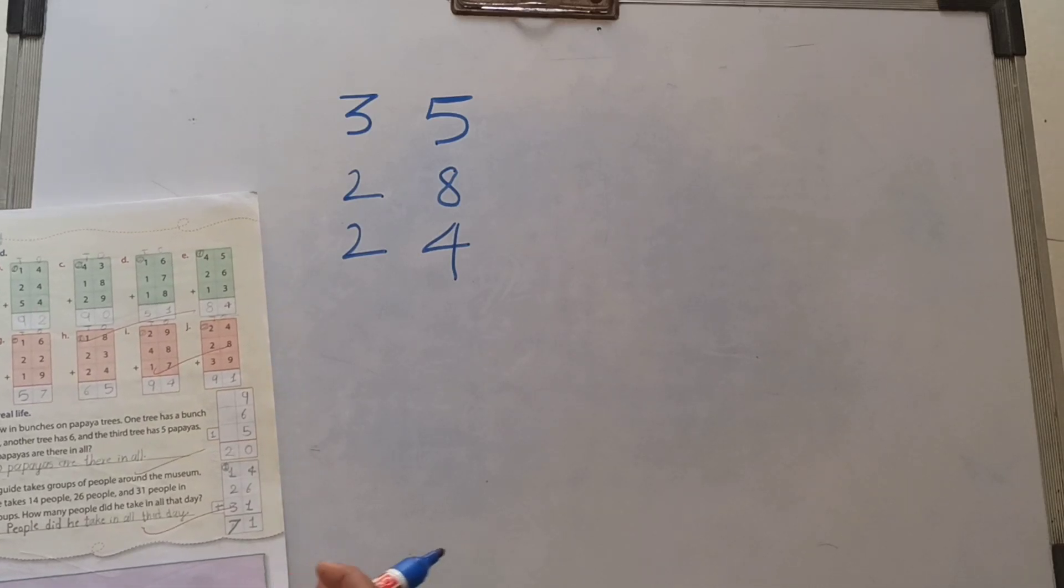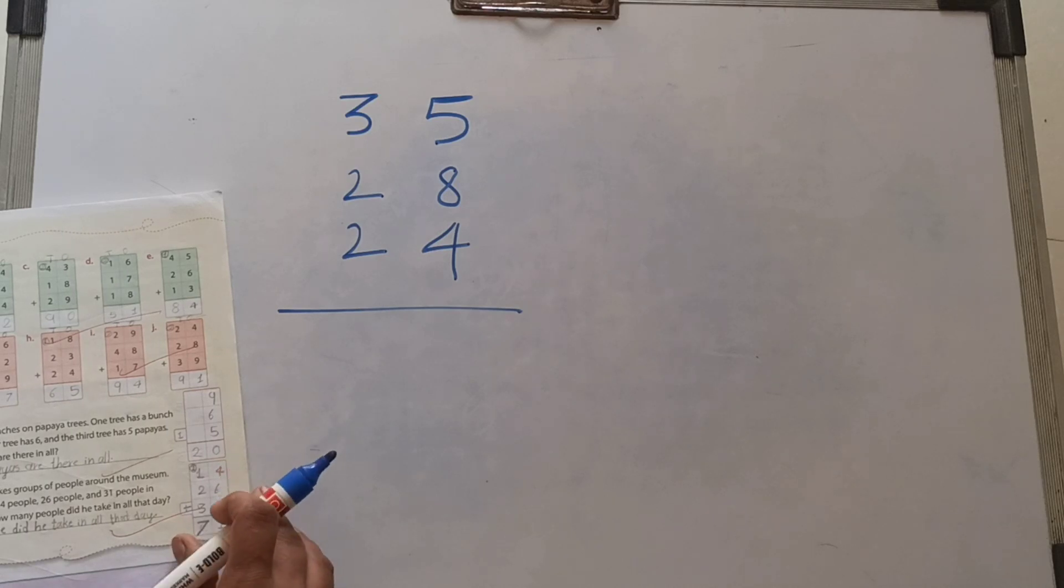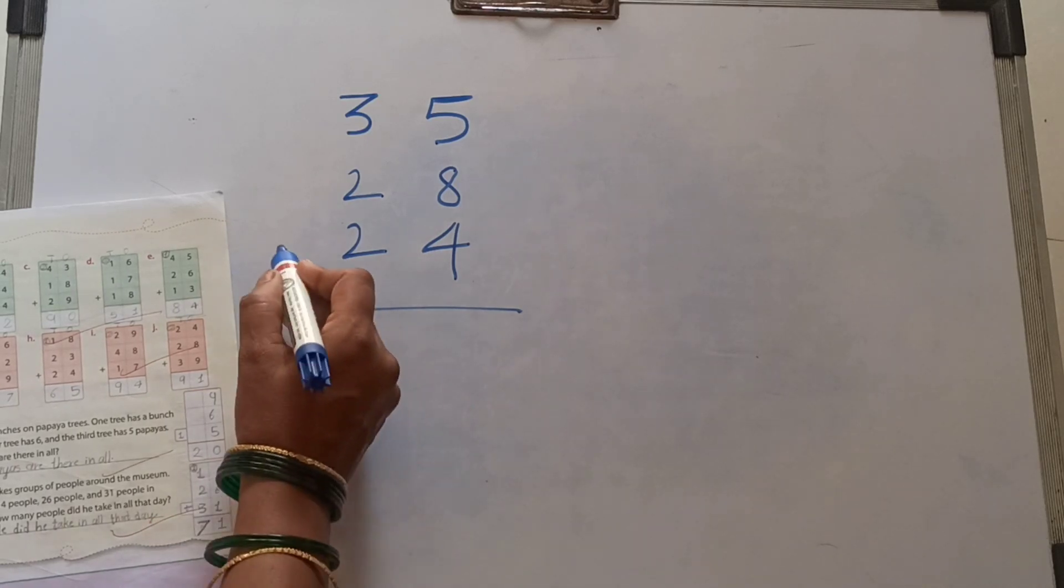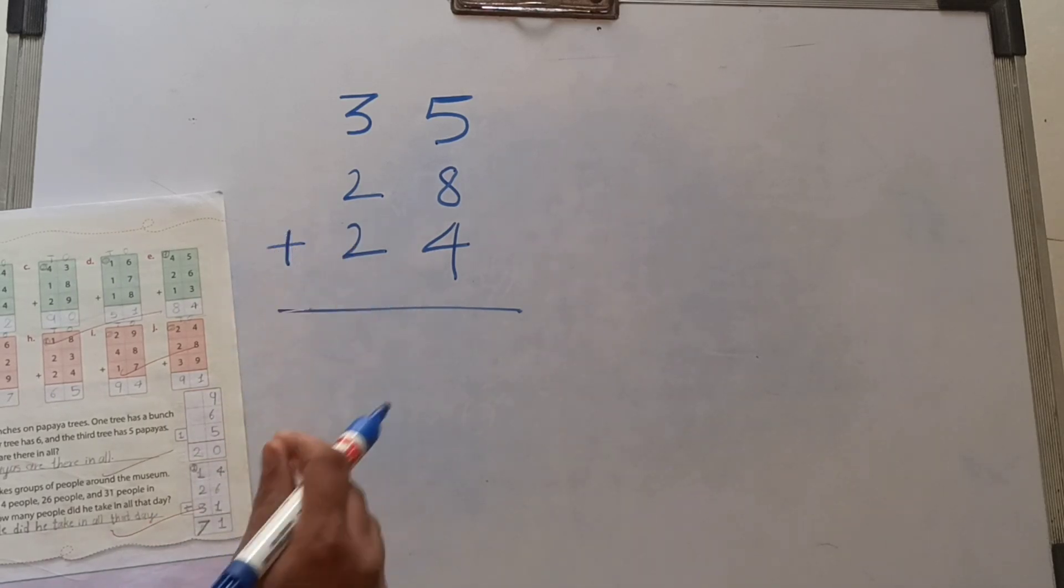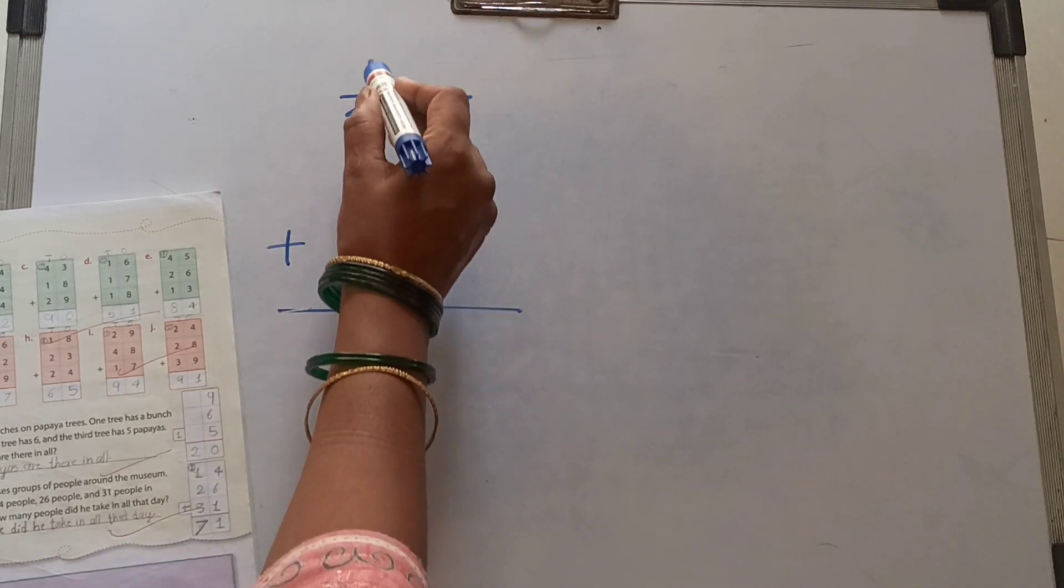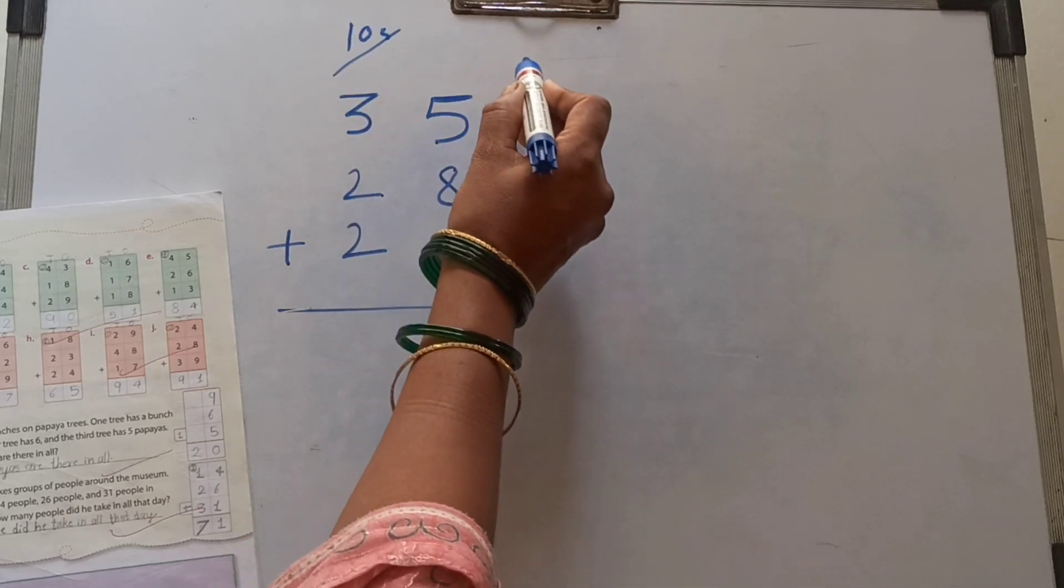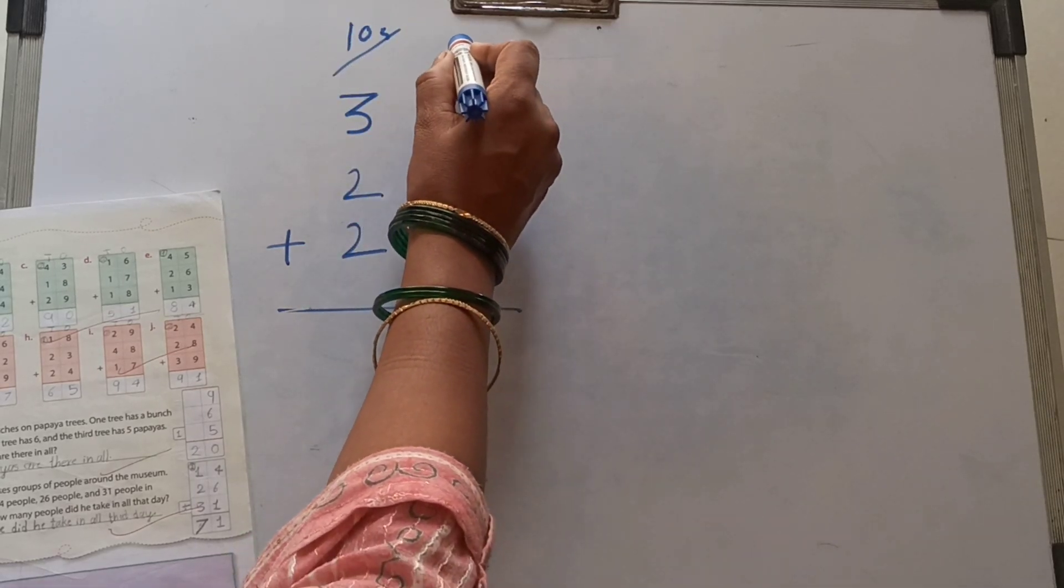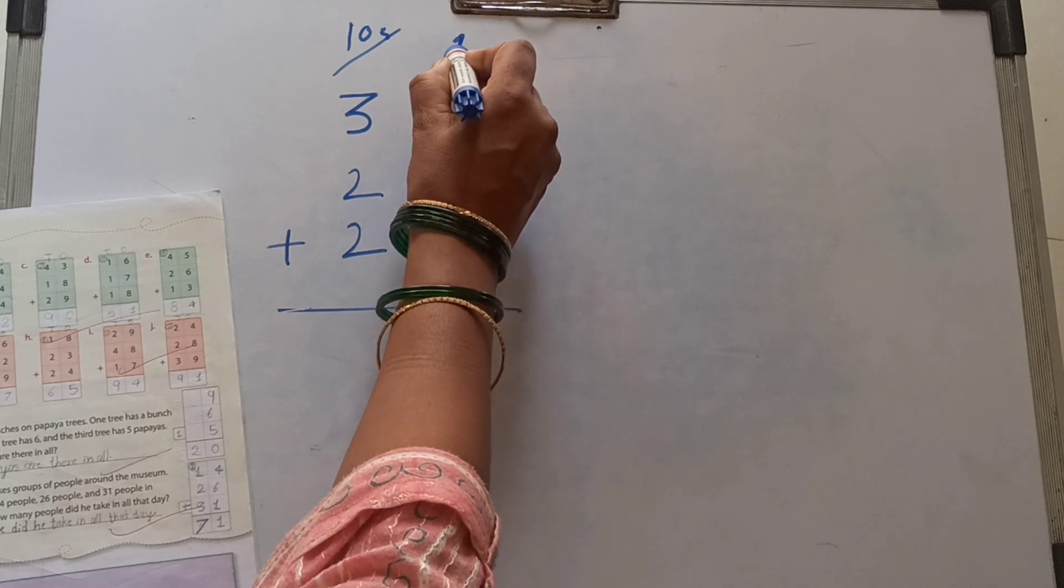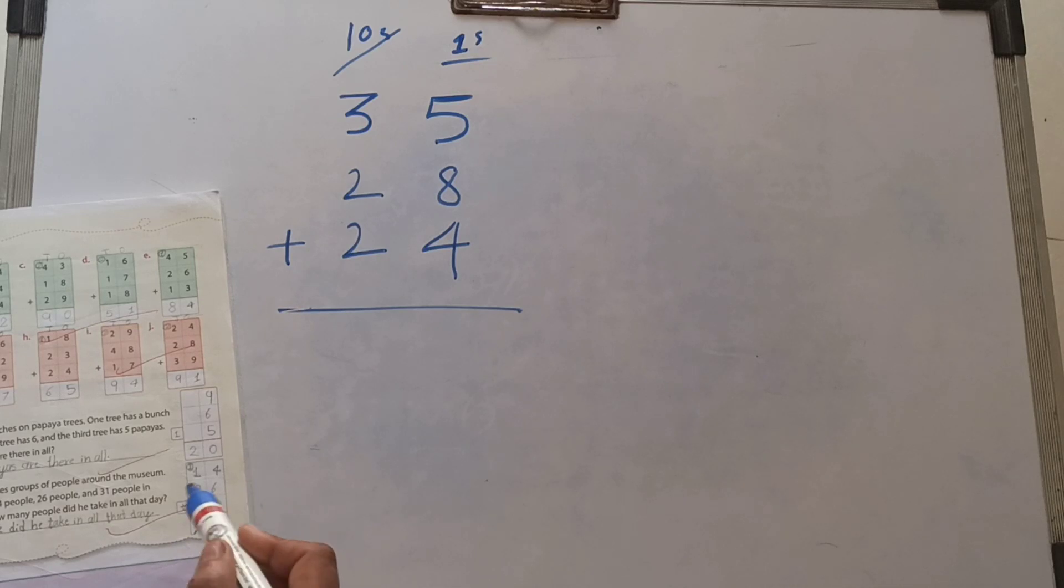Okay, we form this type of numbers. This one plus sign is very important. This one tens, and this one ones.